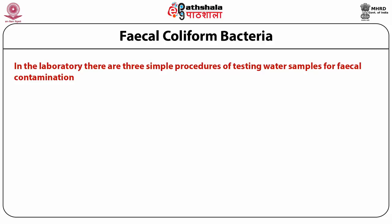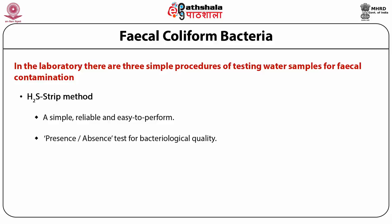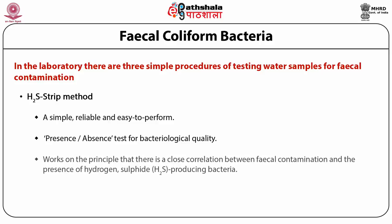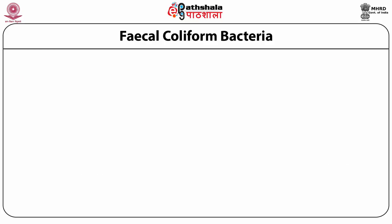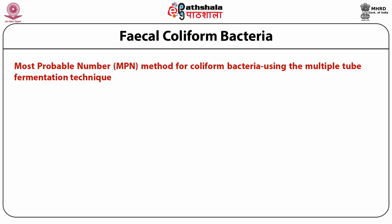Now we discuss the methods of testing fecal coliform bacteria. In the laboratory there are three simple procedures for testing water samples for fecal contamination. Number one is the hydrogen sulfide strip method — a simple, reliable, and easy-to-perform method. The presence-absence test for bacteriological quality works on the principle of a close correlation between fecal contamination and the presence of hydrogen sulfide-producing bacteria. The third is the Most Probable Number method for coliform bacteria using the multiple tube fermentation technique.